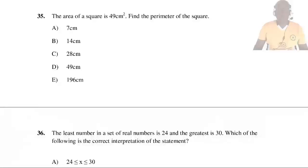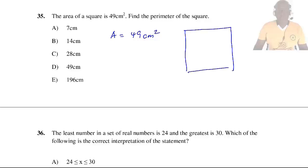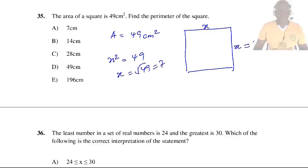Question 35: The area of a square is 49 cm². What is the perimeter of the square? Area = S² = 49, so S = √49 = 7 cm. Since a square has 4 sides, perimeter = 4 × 7 = 28 cm. So the answer is C.